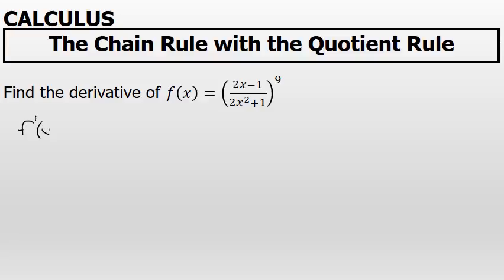The chain rule states that when you have a quantity to a power, bring that power to the front, decrease the power by 1, leaving what's inside the quantity unchanged.